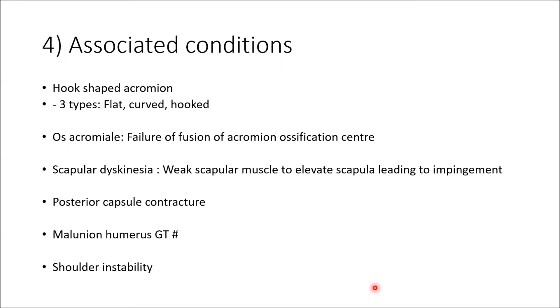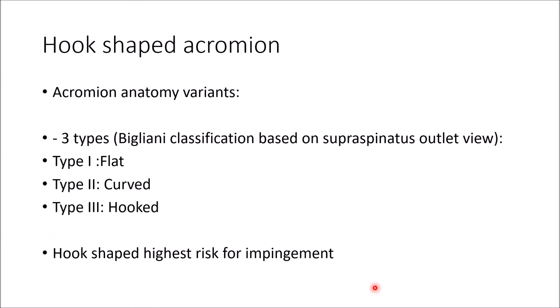Associated conditions related to impingement syndrome include: hook-shaped acromion, which is classified into three types — flat, curved, and hook — and is associated with high risk of impingement. Next is os acromialis, which is failure of fusion of the acromion ossification center. Then scapular dyskinesia, where weakness of scapular muscles can lead to impingement. Also, posterior capsule contracture, malunion of the humerus tuberosity, and shoulder instability.